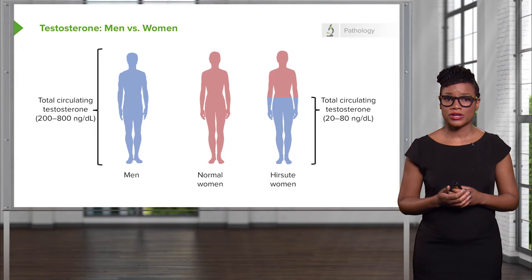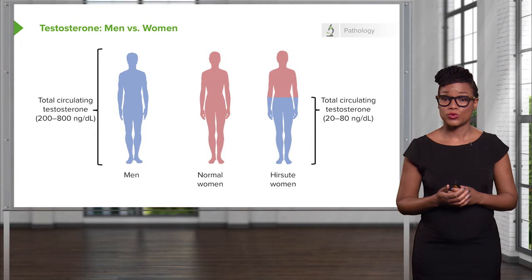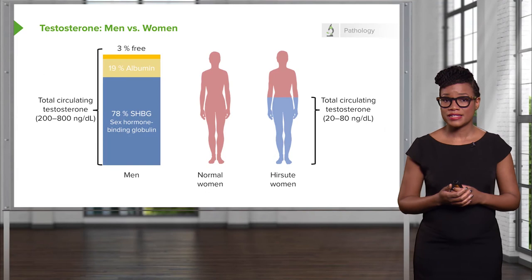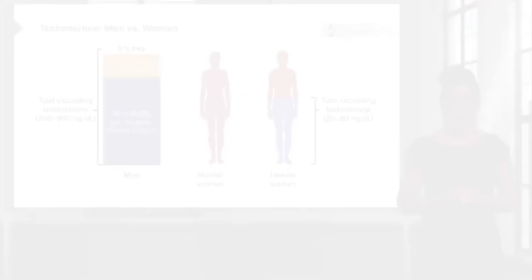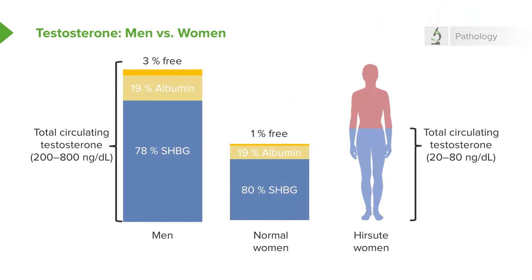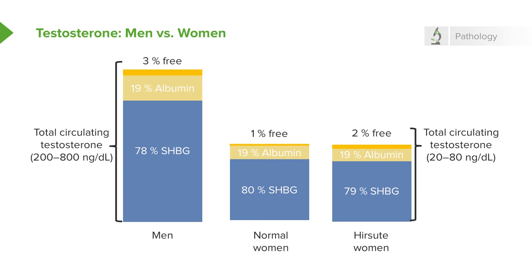Not all of that testosterone is bioavailable — some of it is actually free. In men, 3% is free, while the vast majority is bound to either albumin or sex hormone binding globulin. In a normal woman, about 1% is free and the majority is bound. However, in a hirsute woman, the percent that is free is actually doubled, though most of the free testosterone is still bound to either albumin or SHBG.